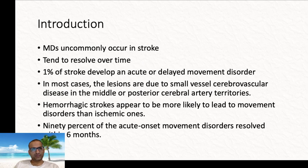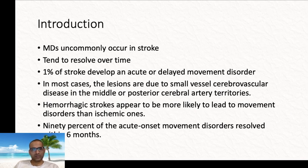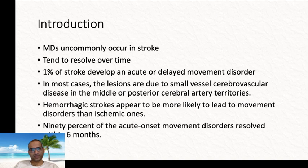In the introduction, the article discusses the epidemiology of movement disorders in stroke. About 1% of acute strokes have some kind of movement disorder problem. Most cases are due to involvement of the middle cerebral artery or posterior cerebral arteries. Hemorrhagic stroke seems more common than ischemic stroke in causing movement disorders, and it is usually a self-resolving condition — 90% resolve within six months.